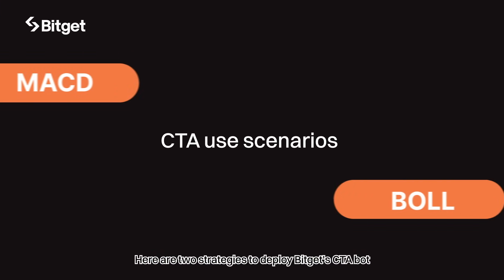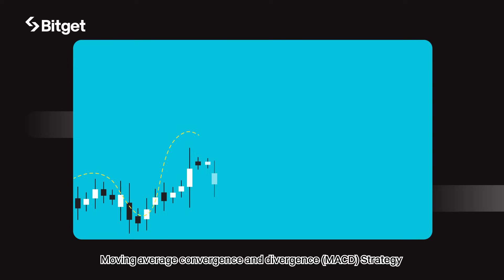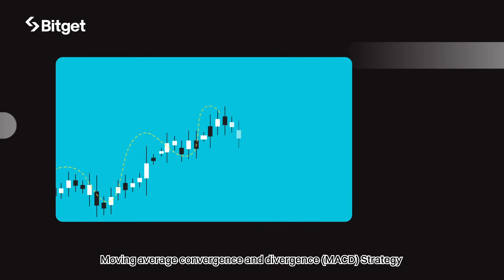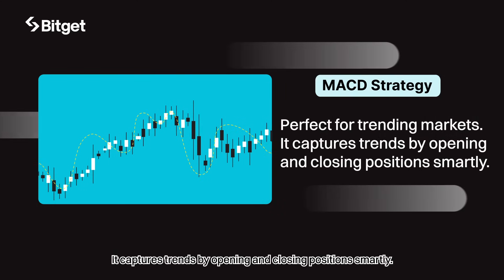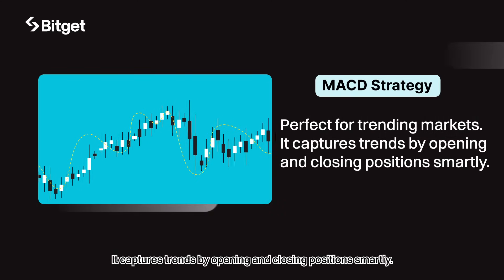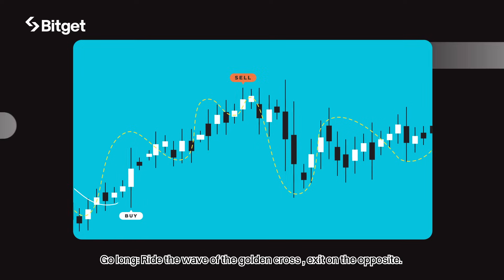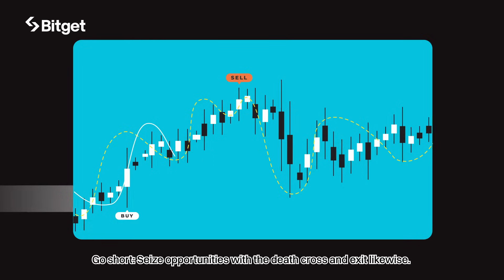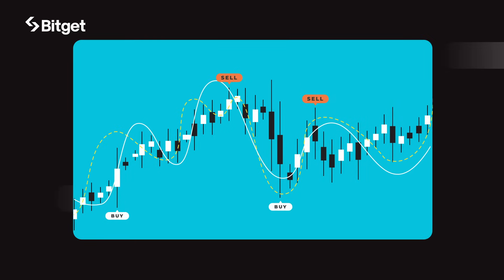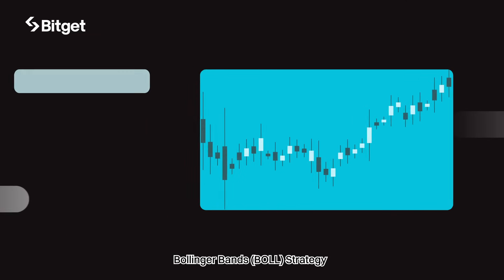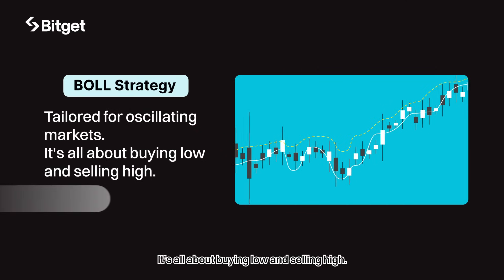Here are two strategies to deploy Bigot's CTA bot. The Moving Average Convergence and Divergence (MACD) strategy is perfect for trend markets — it captures trends by opening and closing positions smartly. Go long to ride the wave of the golden cross and exit on the opposite signal. Go short to seize opportunities with the death cross and exit likewise.